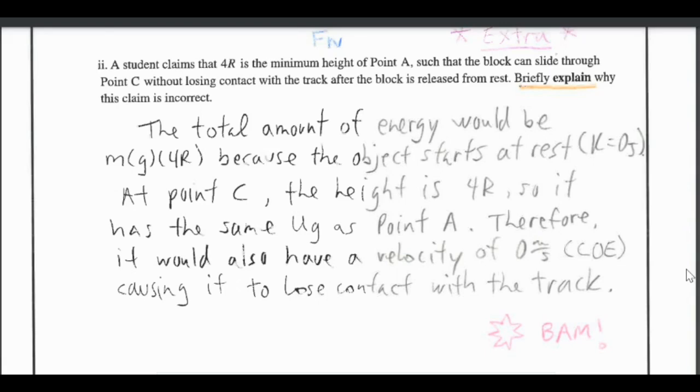I wrote the total amount of energy would be mg(4R) because the object starts at rest. At point C the height is 4R so it has the same gravitational potential as point A, therefore it would also have a velocity of 0 meters per second. So if it has no velocity at the very top then it would kind of just fall off so that would make it lose contact. And then bam, it's over, everything's all correct.